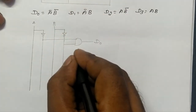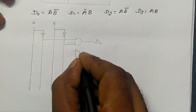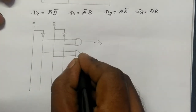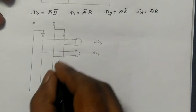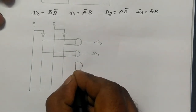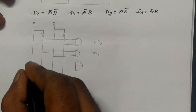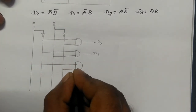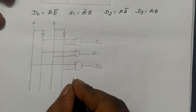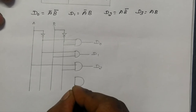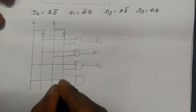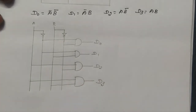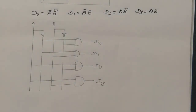For D1, we have an AND gate with inputs A-bar and B, giving D1. For D2, an AND gate with inputs A and B-bar, giving D2. For D3, an AND gate with inputs A and B, giving D3. This is the implementation of the 2-to-4 line decoder.